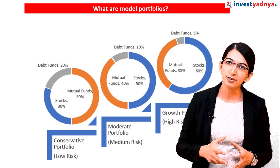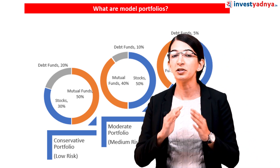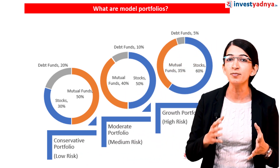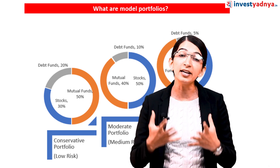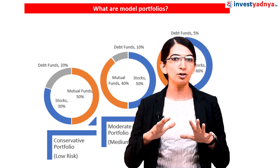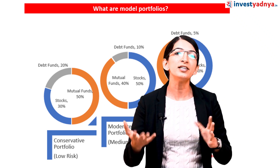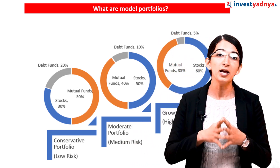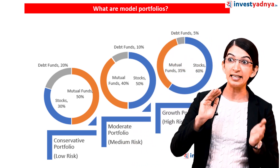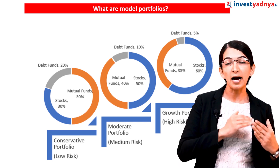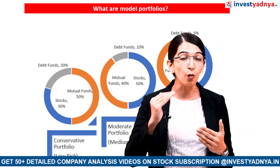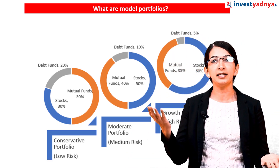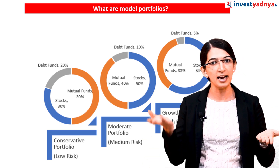The second one is a moderate model portfolio, which is meant for investors with a medium risk profile that have a time horizon of about five years. Their return expectations from the portfolio is decent growth with moderate standard deviation. The last one is a growth model portfolio where the time horizon is at least eight years. The investor expects the portfolio to grow at a high pace and is ready to take high volatility in return for high returns.